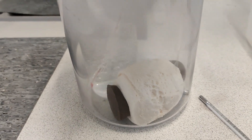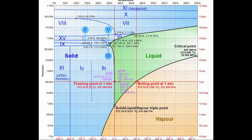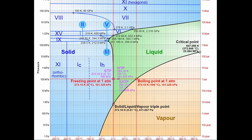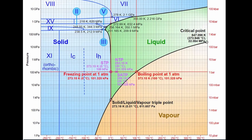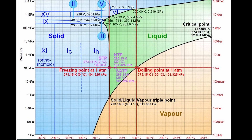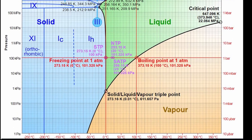In a pressure cooker we do the opposite. We are increasing the pressure and it will raise the boiling point above 100 Celsius, meaning above 212 Fahrenheit.